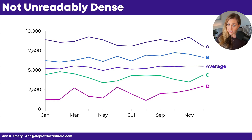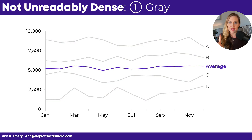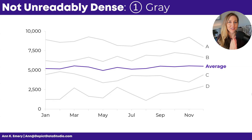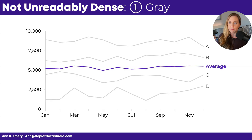Fix number one is you gray out everything, and then you highlight one line at a time. Lots of sidekicks, but you only get one main character. So in this case, you might highlight the average. That's what people would see first, and then a split second later they could look at group A, B, C, and D.